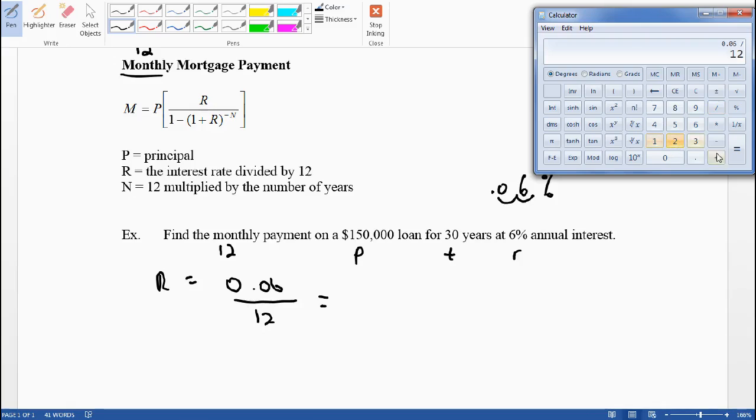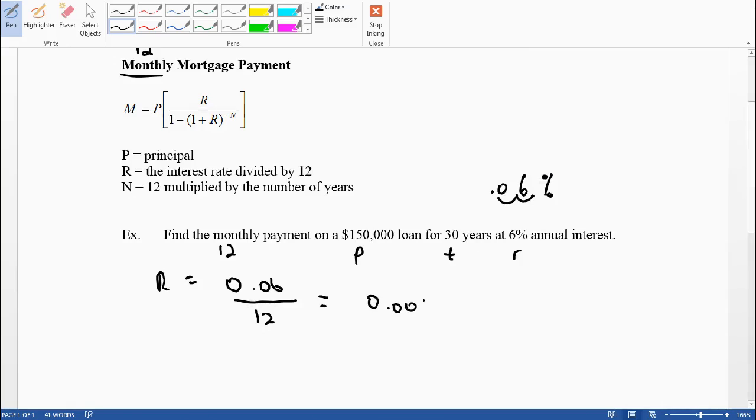Now I need to find big N. I'm going to take the number of compound periods in a year, which is 12 because it's monthly, times the number of years. When you multiply it out, you get 360 compound periods for the life of the loan - 360 payments.